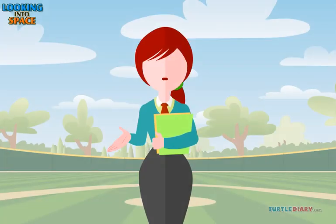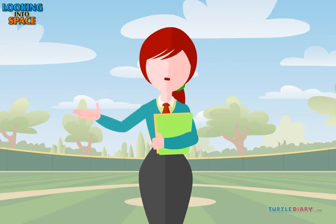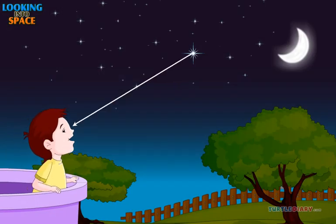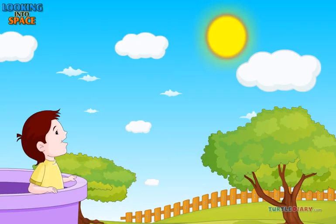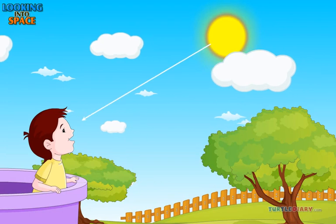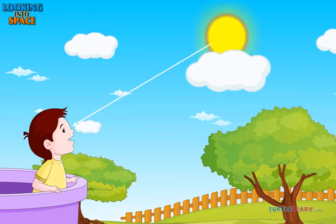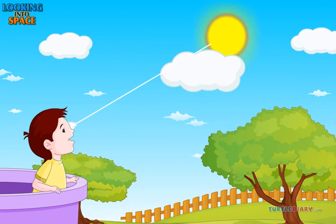There are many things in space that we cannot see. We cannot see them because they are very far away. Our eyes can only see things when we get or receive light from them. But our eyes cannot get any light from things very far away.